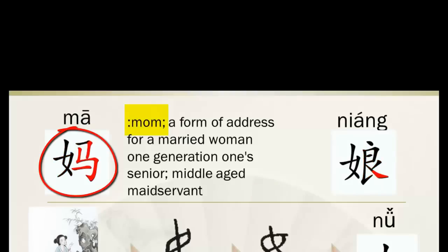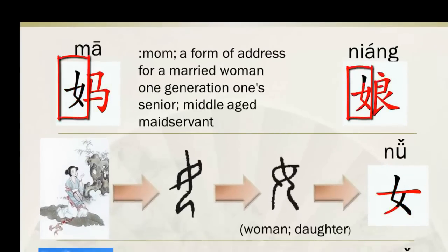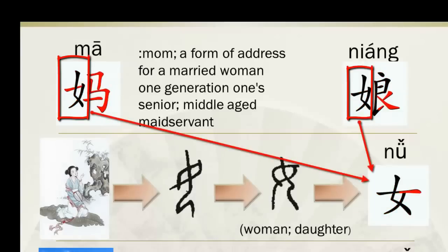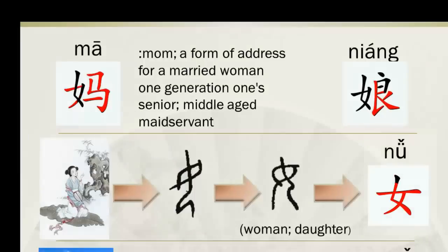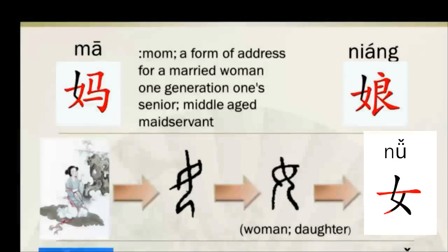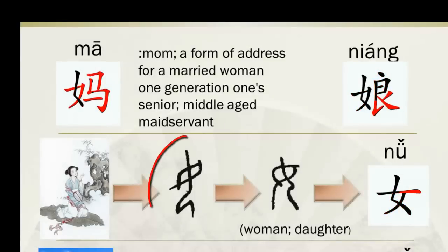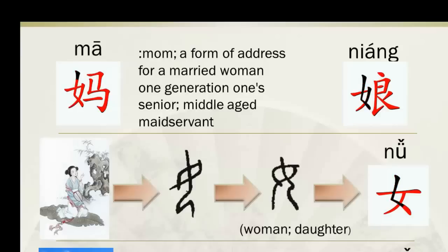妈 is a form of address for a married woman one generation senior. The left part of both 妈 and 娘 is the same — it comes from the zi 女 (nǚ), third tone. Its jiaguwen form looks like a woman sitting on her heels. This zi means woman or daughter.